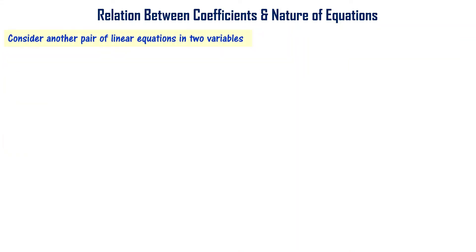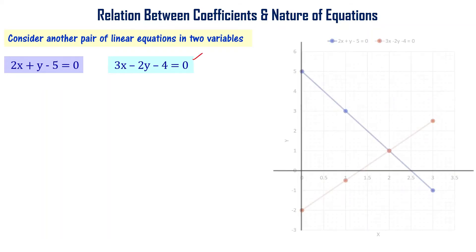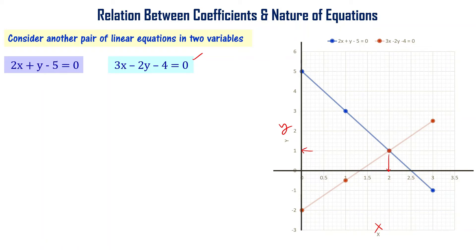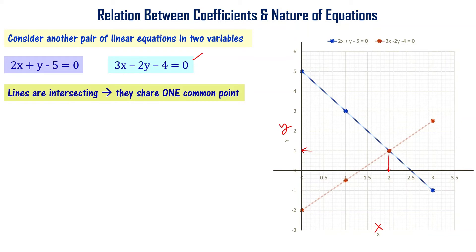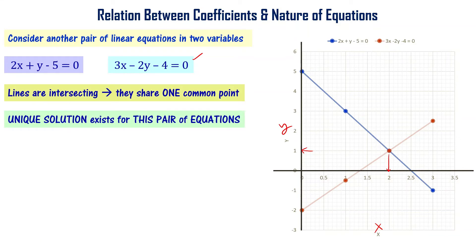Another pair of linear equations: 2x + y - 5 = 0 and 3x - 2y - 4 = 0. In the previous video, we drew the graph for these equations. It has a unique solution — the two lines intersect at one particular point. That intersection point is the unique solution, so this is a consistent set of linear equations.